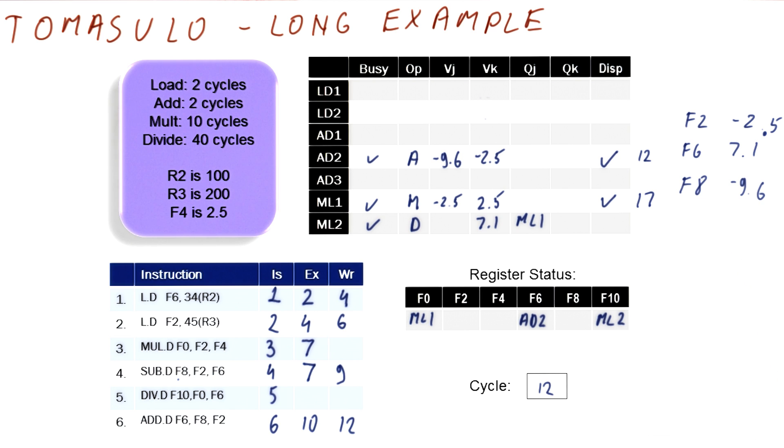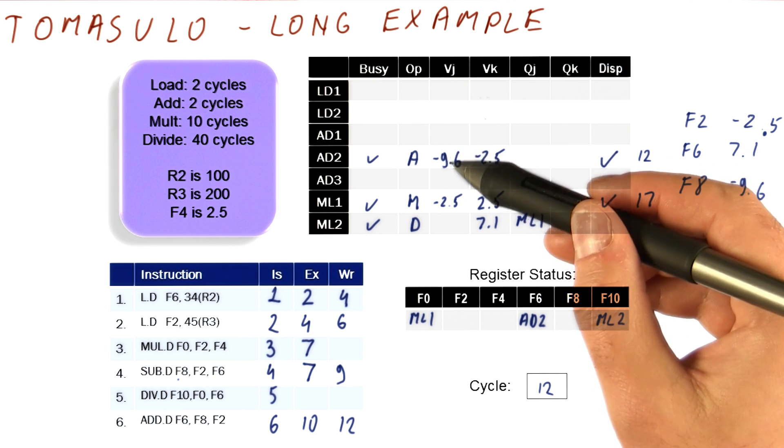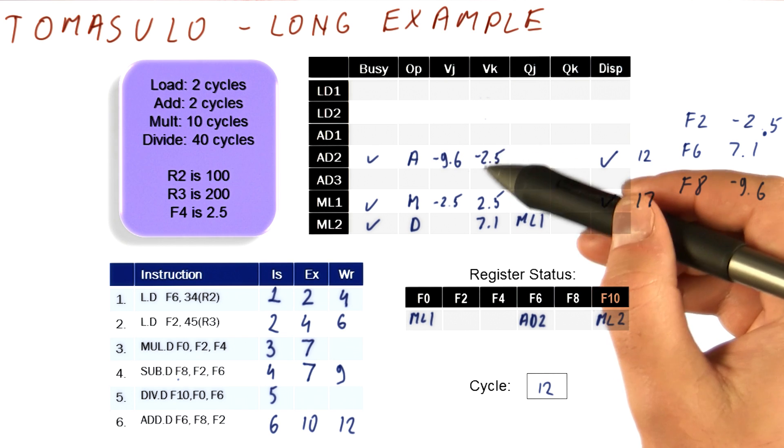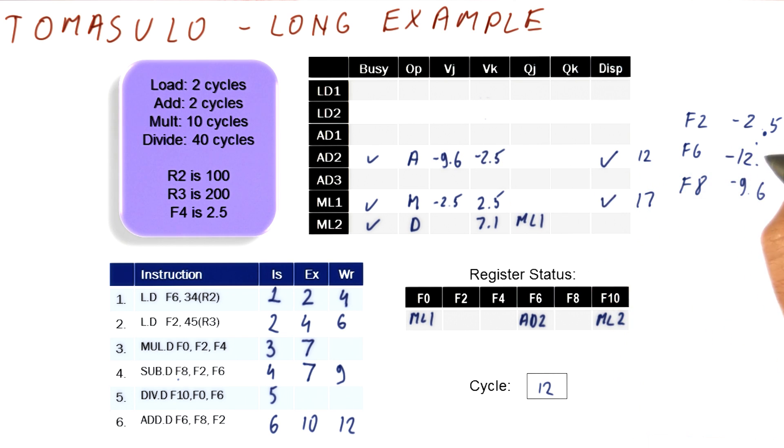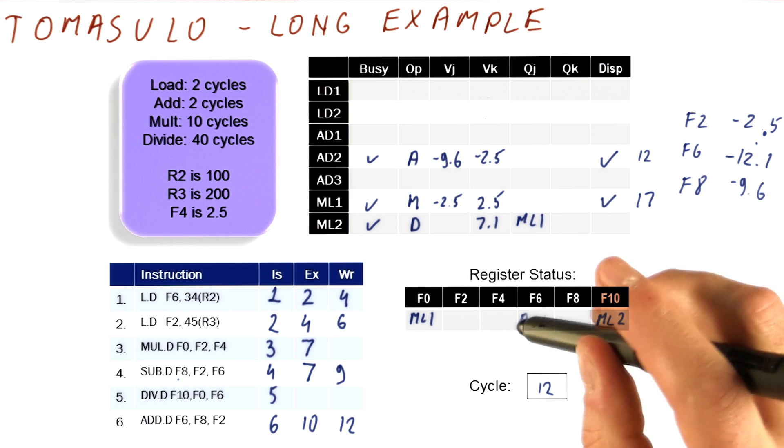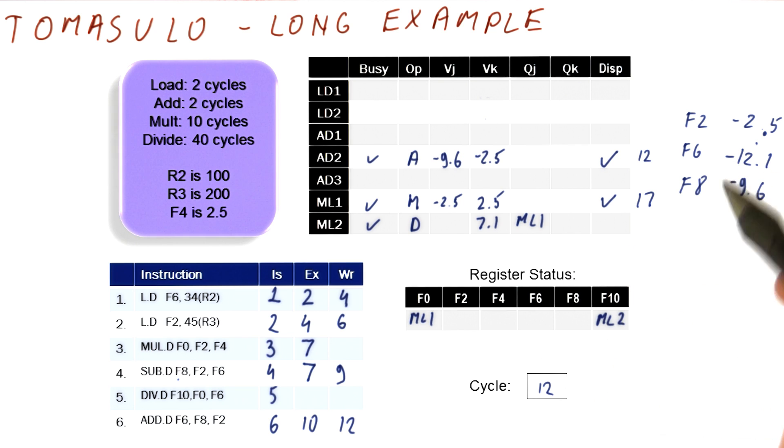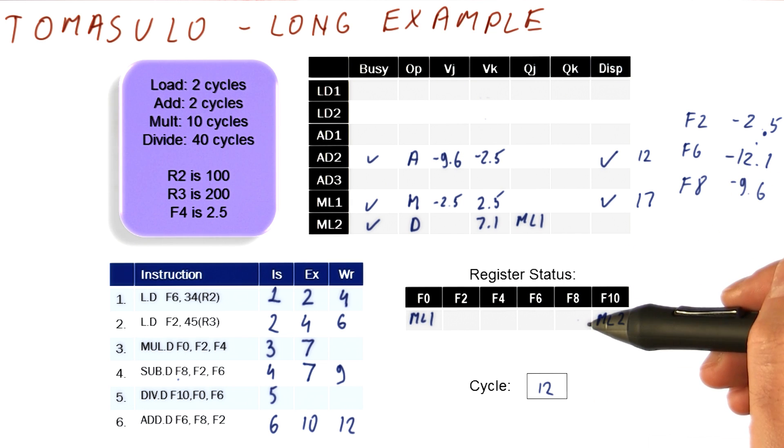And overwrite the value of F6 with the new value, which is minus 9.6 plus minus 2.5. So it's going to be minus 12.1. So this is the value of AD2. And now we're going to un-rename this to make future accesses read the new F6.